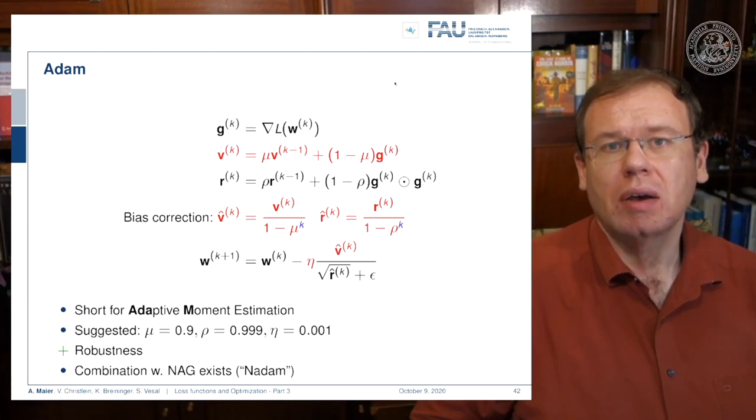This algorithm is called adaptive moment estimation—Adam. Suggestive values are mu 0.9, rho 0.999, and eta 0.001. It's a very robust method and very commonly used. We can combine it with the Nesterov accelerated gradient and then you get NAdam, but still you can improve on this.